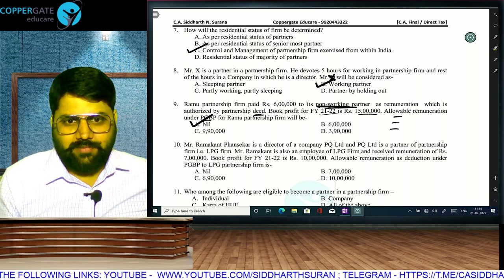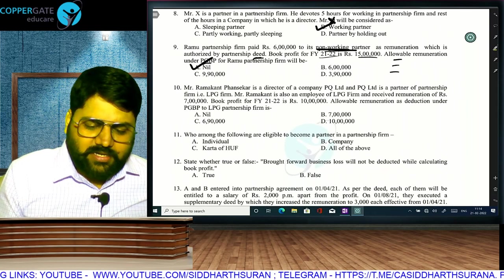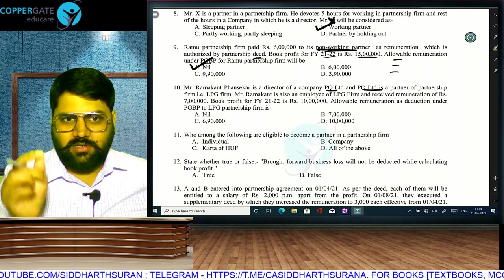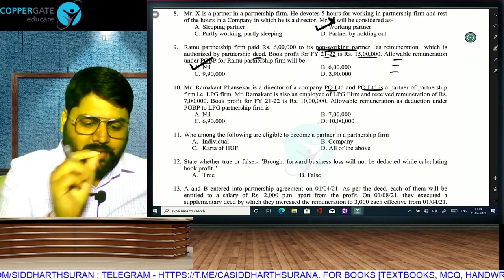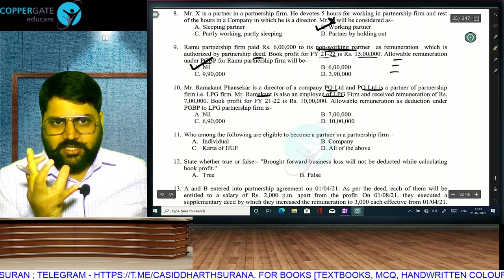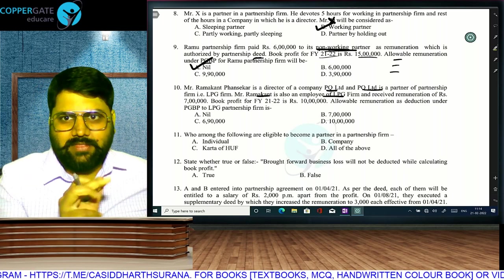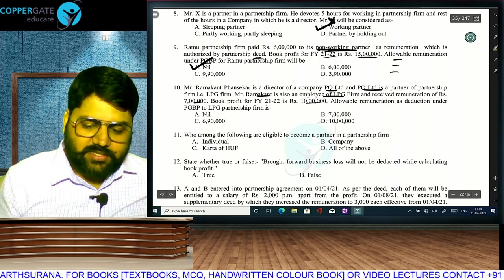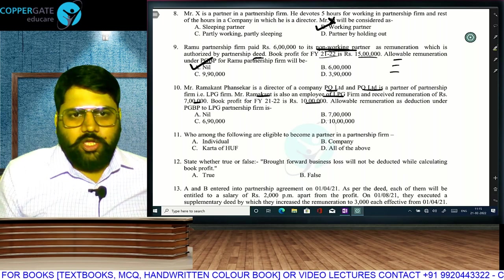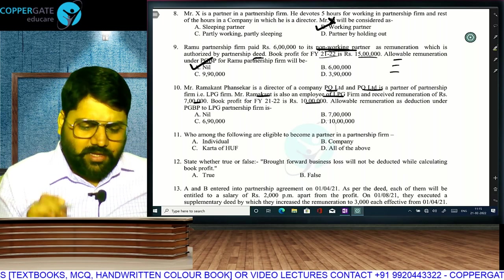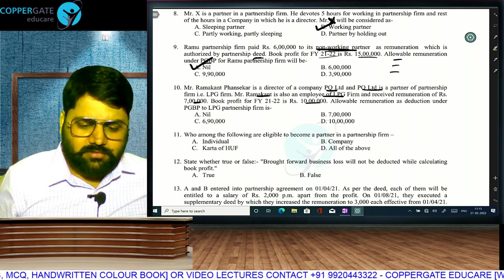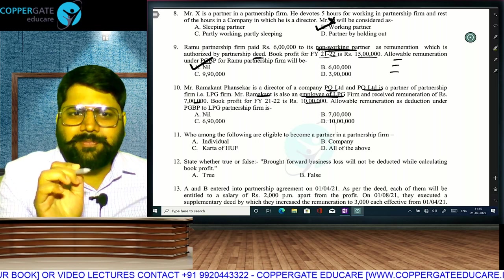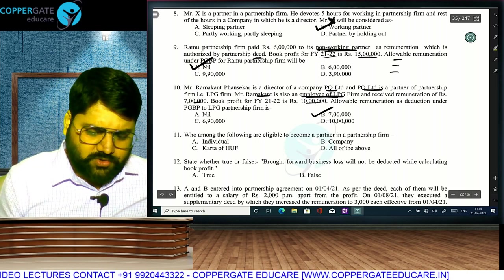Ramakant Fonseca is a director in company PQ Limited, and PQ Limited is a partner in partnership firm LPG. Ramakant is also an employee of the firm. He is not a partner — he is an employee. The limit of section 40B is applicable only if the payment is made to a partner. Since Ramakant is an employee (not a partner), the entire amount is fully allowed without any 40B restriction.